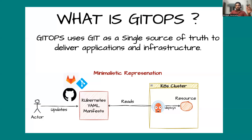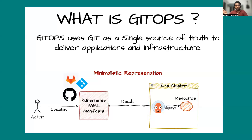Whereas if you take the same example with your source code, you have proper tracking. For source code, we always put application-related code — whether Java or Python — in a Git repository. Whenever you need to make a change, you submit a pull request, it goes through a proper verification mechanism, gets merged into the Git repository, and then you use Jenkins or any other CI platform to build your application. There is a proper mechanism for the CI part.